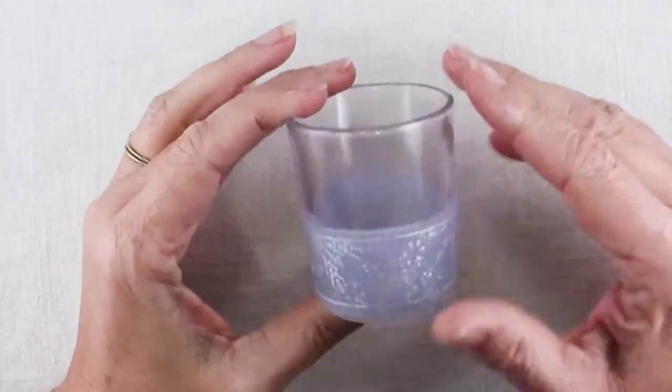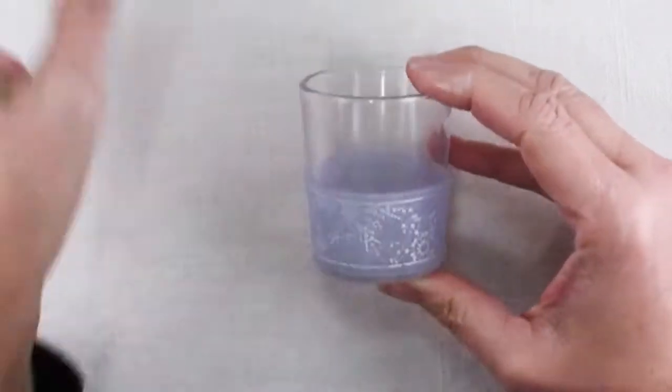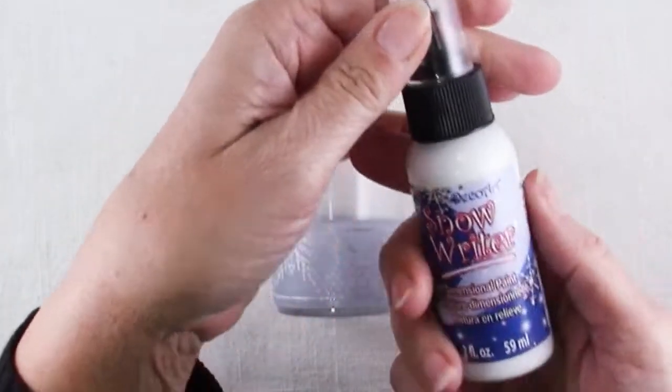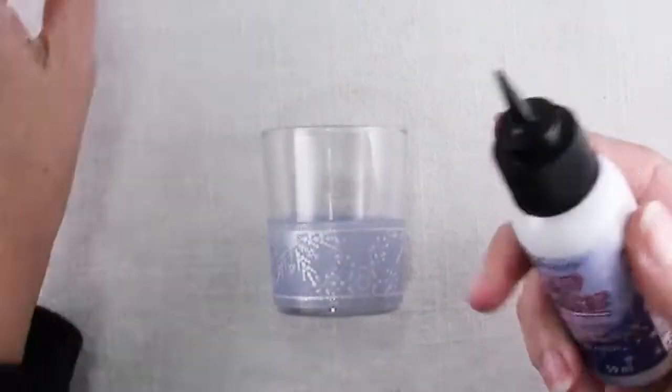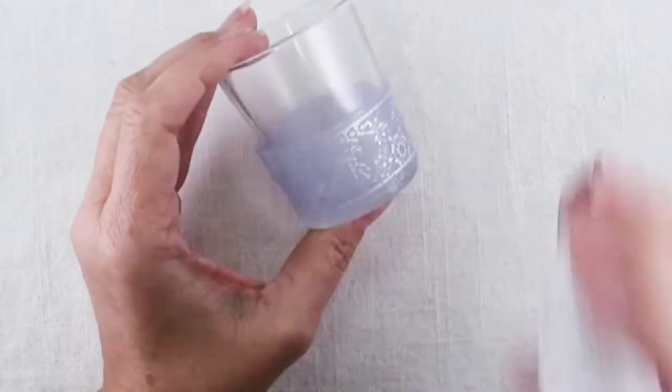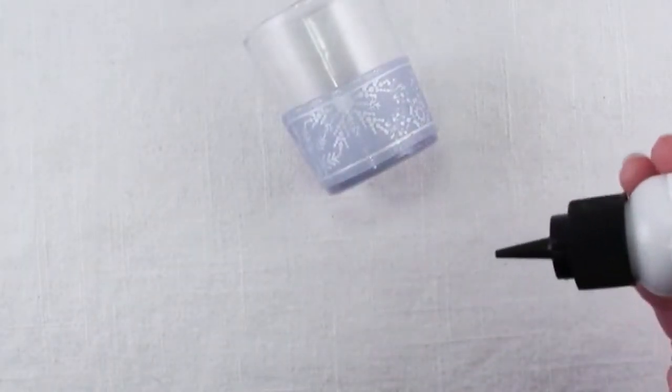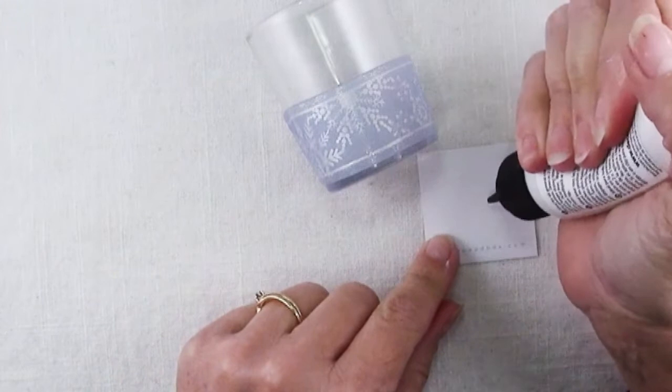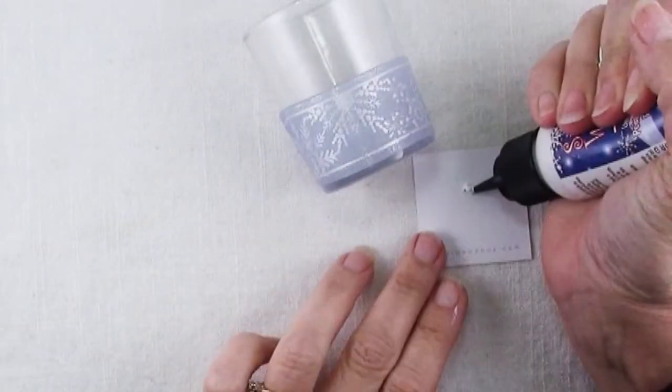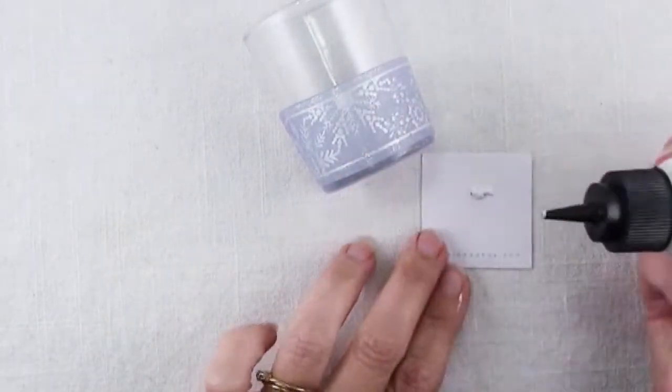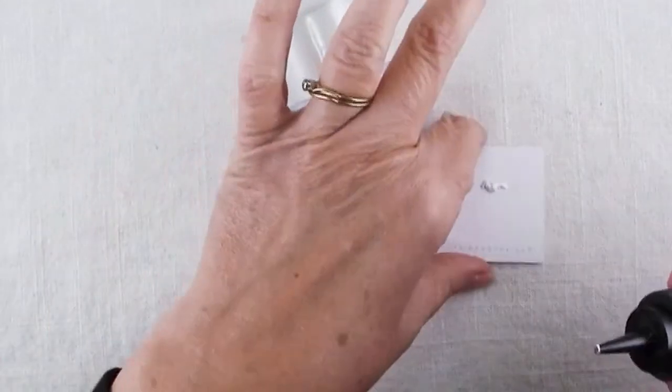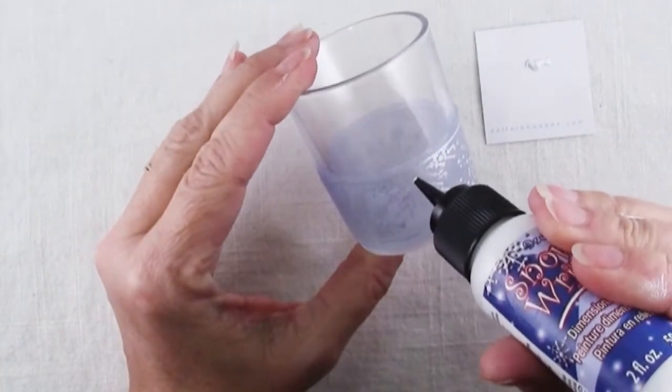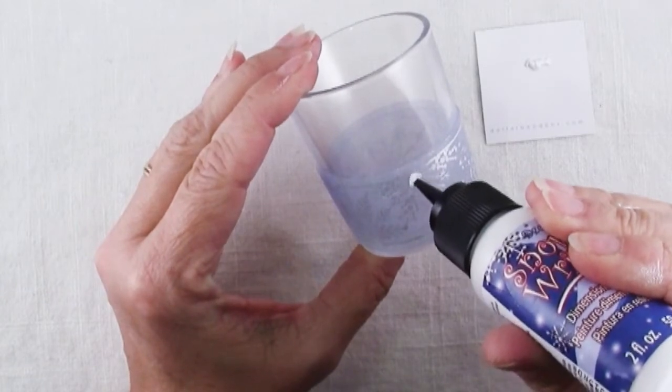Once your candle holder comes out of the oven, you can leave it like this or you can give it a little bit more dimension with the snow writer that comes in the same kit as the silkscreen. This is super easy to use. Just be sure to have a piece of paper nearby to get it started. This is interesting stuff. It kind of has a bit of a gritty texture, so it does sort of look like snow. So you can just go around and accent any areas you want.